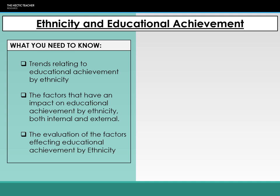In this lecture we're going to be looking at the trends in educational achievement linked to ethnicity and the internal and external factors which can affect and influence those trends. We're going to be combining both the external and internal in this lecture video rather than having two separate ones. So to begin with, let's look at the trends.